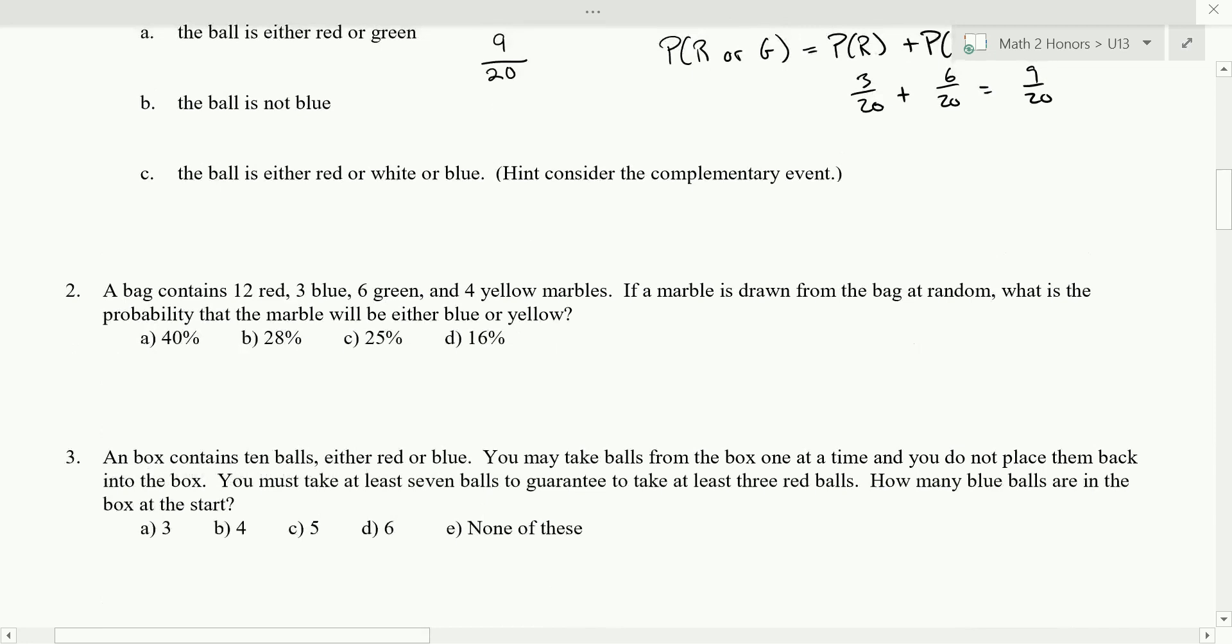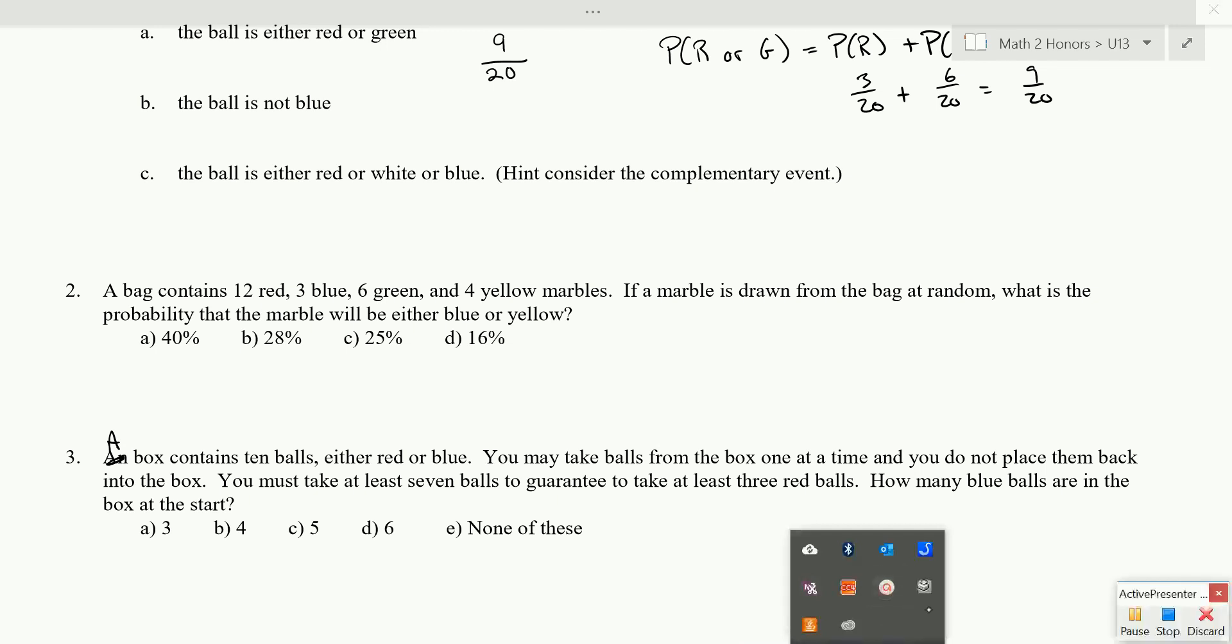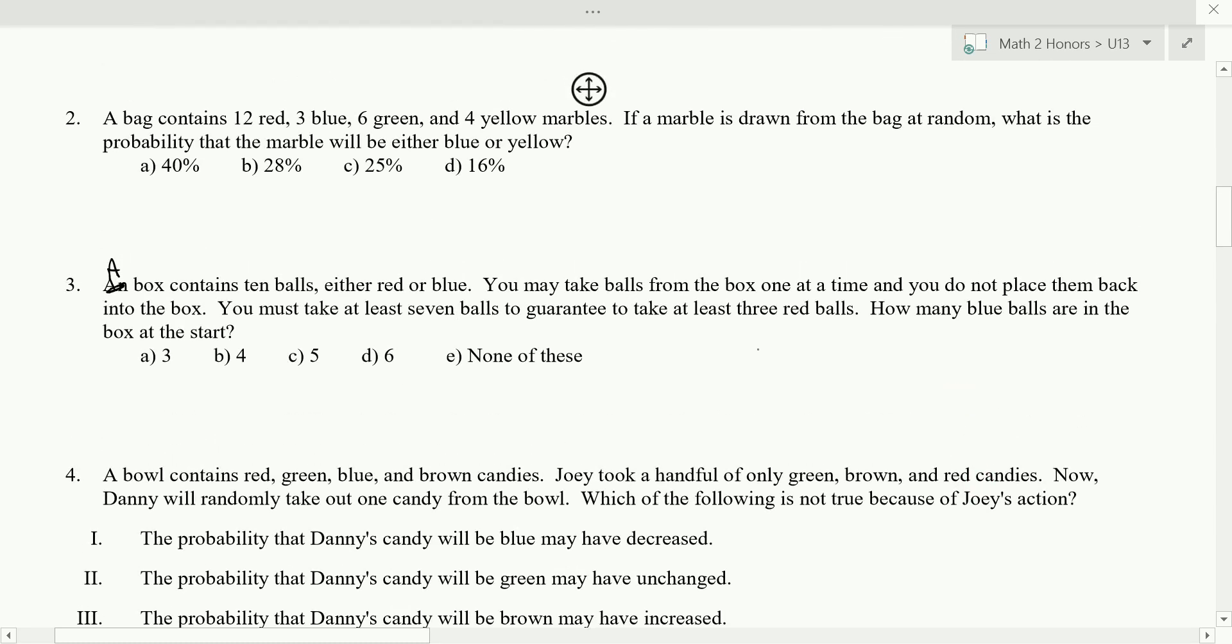Let's try number three together. And there's another typo. I should say a box contains 10 balls, either red or blue. You may take balls from the box one at a time and you do not replace them back into the box. You must take at least seven balls to guarantee to take at least three red balls. How many blue balls are in the box at the start? So it's one of those, like, you gotta read it a few times to understand what it's saying. Try it out, though. Okay? So before you explain it, let me set you up with what you're saying. So you're saying four blue, so I'm going to write, I draw four blue, and then that means there's six red, right? So there'd be, everybody okay with that? If there are four blue, there have to be six red because there's ten all together. So explain why you came up with four blue.